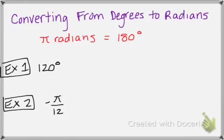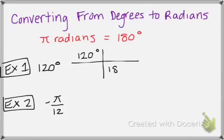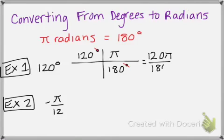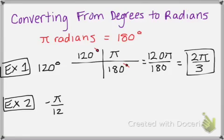Let's talk about how to convert from degrees to radians. Our conversion rate is pi radians equals 180 degrees. So if I'm going from degrees to radians, I'm going to do some dimensional analysis. Since I have degrees on top, to cancel it out I want to put degrees on the bottom, and then I need something that it's equal to, which is pi. My units cancel out, and I have 120 pi over 180, which simplifies to 2 pi over 3. So 2 pi over 3 radians is the same as 120 degrees.